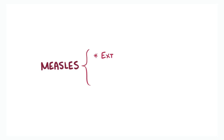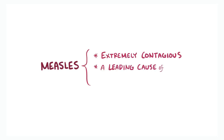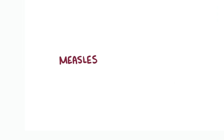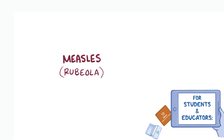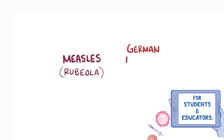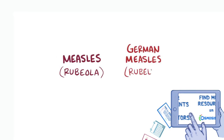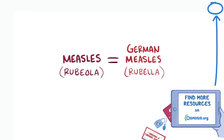Measles is one of the most contagious infectious diseases, and remains a leading cause of death, particularly among young children, especially in areas with low rates of vaccination. Measles is also called rubeola, which can easily get confused with German measles, also called rubella — similar sounding names but very different viruses.